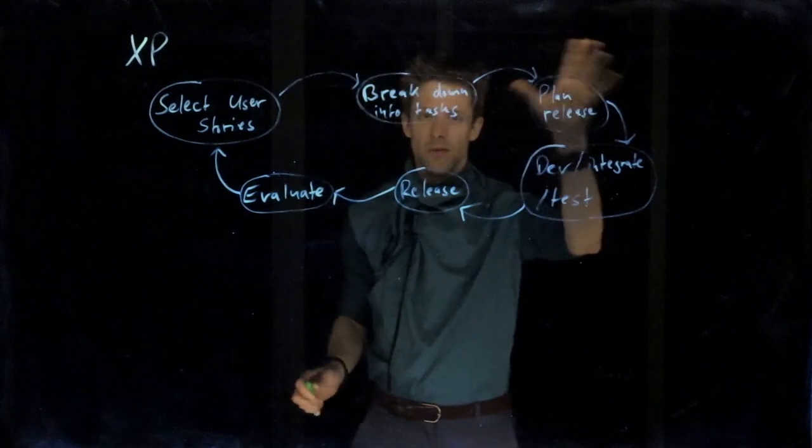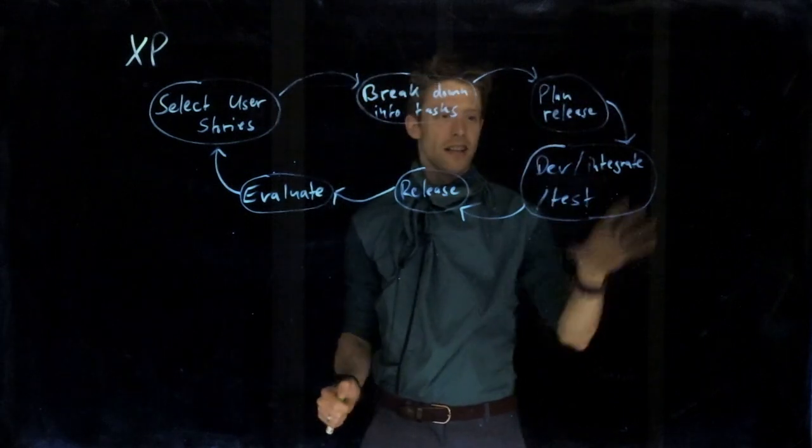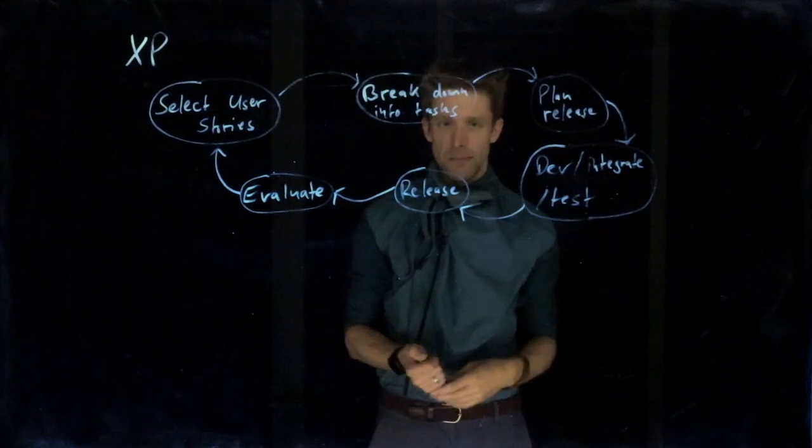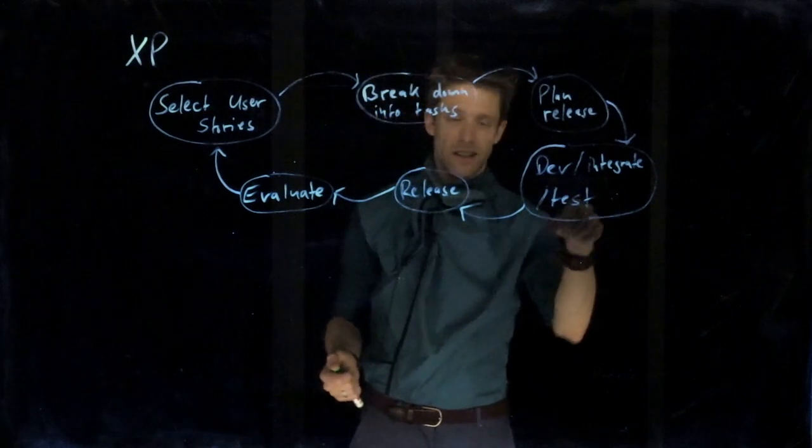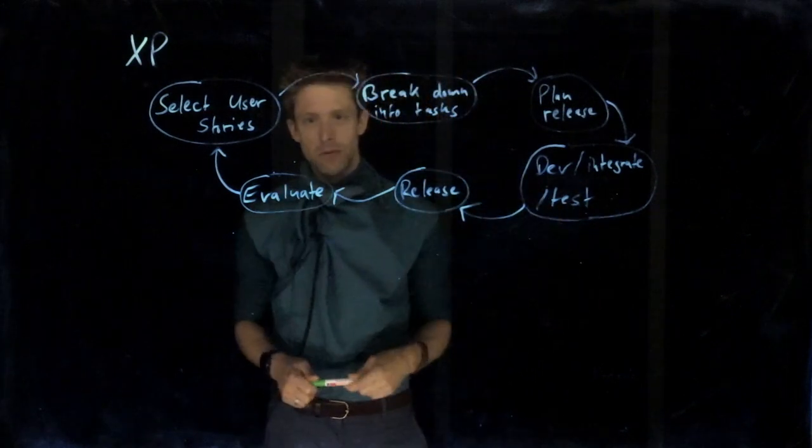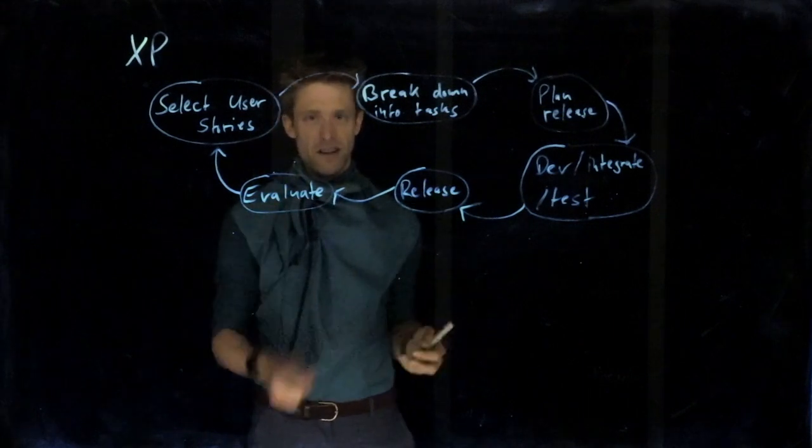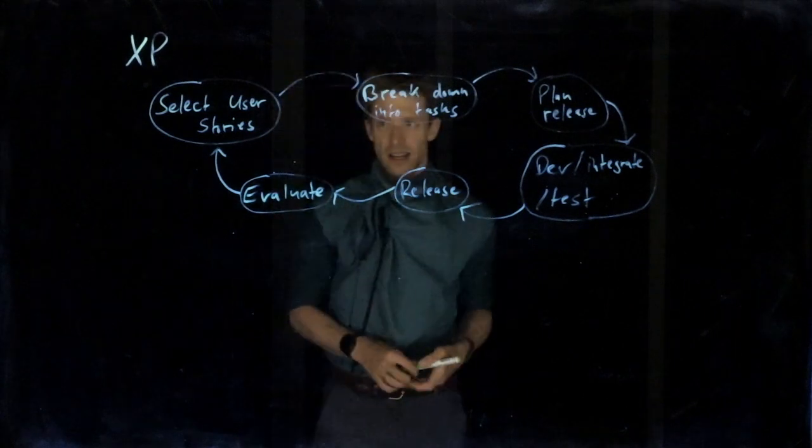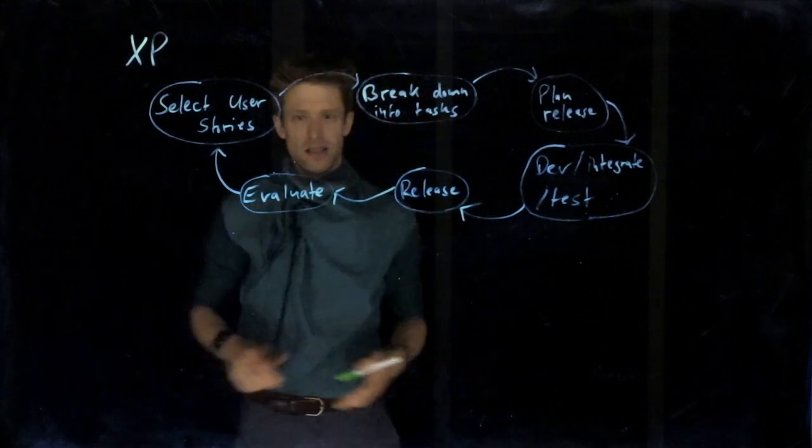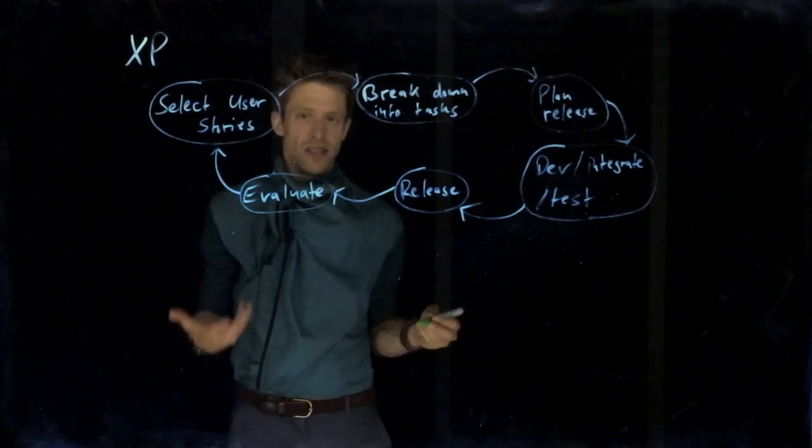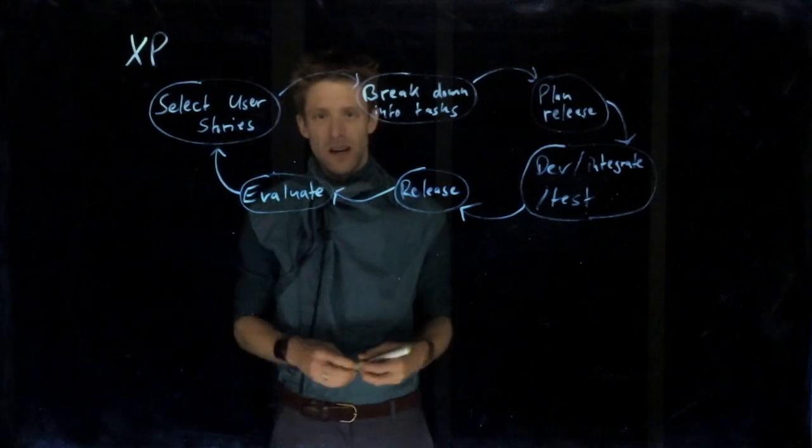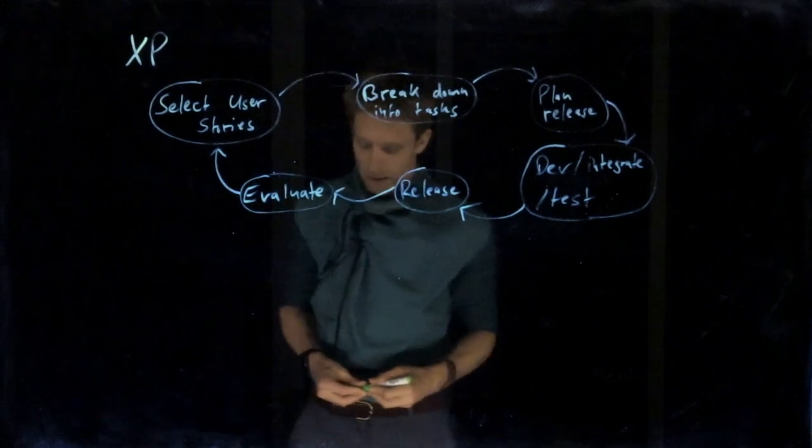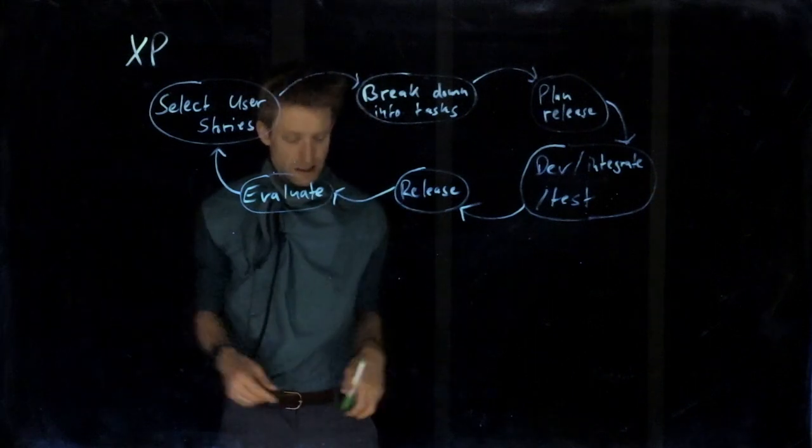The release is planned. What do we need to release this current increment? And then the actual development, integration, and testing takes place in an intertwined manner. So whenever we have something developed, we integrate it and test it and do that incrementally. Then we release the software and we evaluate it with stakeholders, with customer representatives, for example. And these iterations just continuously go on for individual releases, but releases could even happen several times per day theoretically. But typical values are probably two weeks or so.